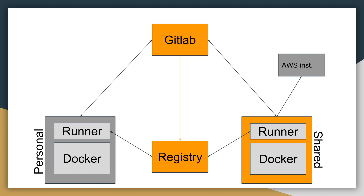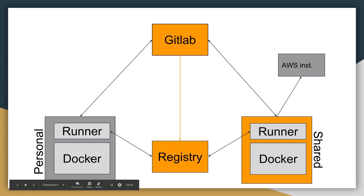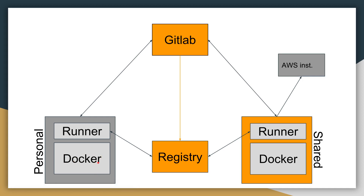The docker executor is also known as docker-in-docker execution. When we create a GitLab CI dot YAML file, we can use an image — Ubuntu, Node, Apache, whatever we want. But what happens if we want to use a docker image? That is possible and it is what we are going to do. We are virtualizing docker into an already-running docker, pulling an image from Docker Hub or wherever we want.